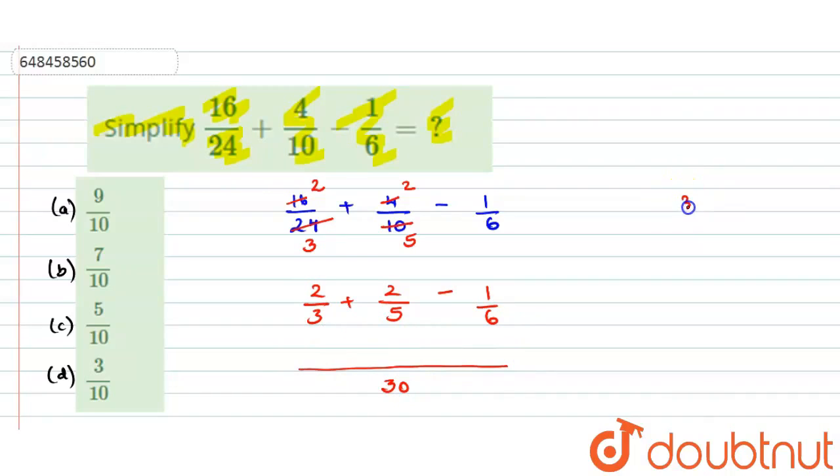We need to take the LCM. We have 3, 5 and 6. We divide by 3, getting 1, 5 and 2. Next we divide by 2, and we will get 1, 1 and 1. So we have to multiply these 3: 5 into 2 into 3 is 30.